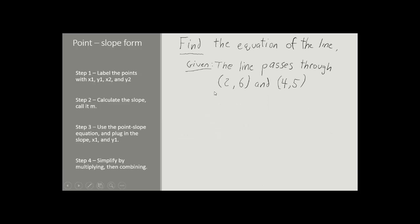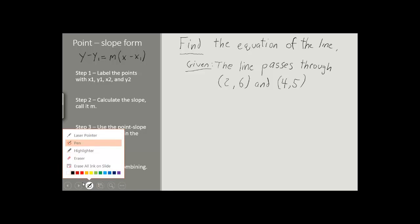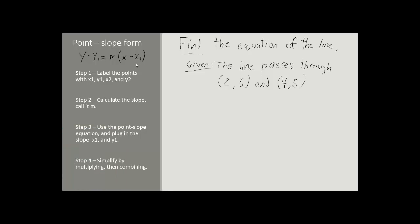In order to find the equation of a line in point-slope form, we have to start from the point-slope equation, which goes like this: y minus y1 equals m times the quantity x minus x1. We're going to need to plug in three values: an x1 value (underlined in red), a y1 value (underlined in green), and an m value, or slope (underlined in blue).